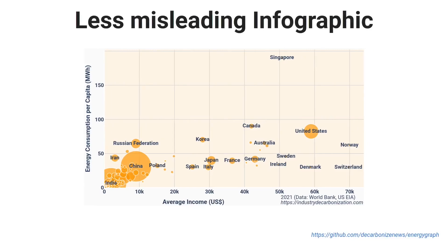So what happens if you fix all these things and just use a normal scale? Then you get something like this. I took the same data from the EIA, since they provide it for free, and the income data from the World Bank, with point size representing population. What you can take away is that for countries below a certain income level, this relation is true — there is a strong correlation between energy and income, though not as strong as they want you to believe. But within the richer countries, there are huge differences: Canada uses three times as much as Denmark or Switzerland, and above a certain income level, this relation is no longer true.